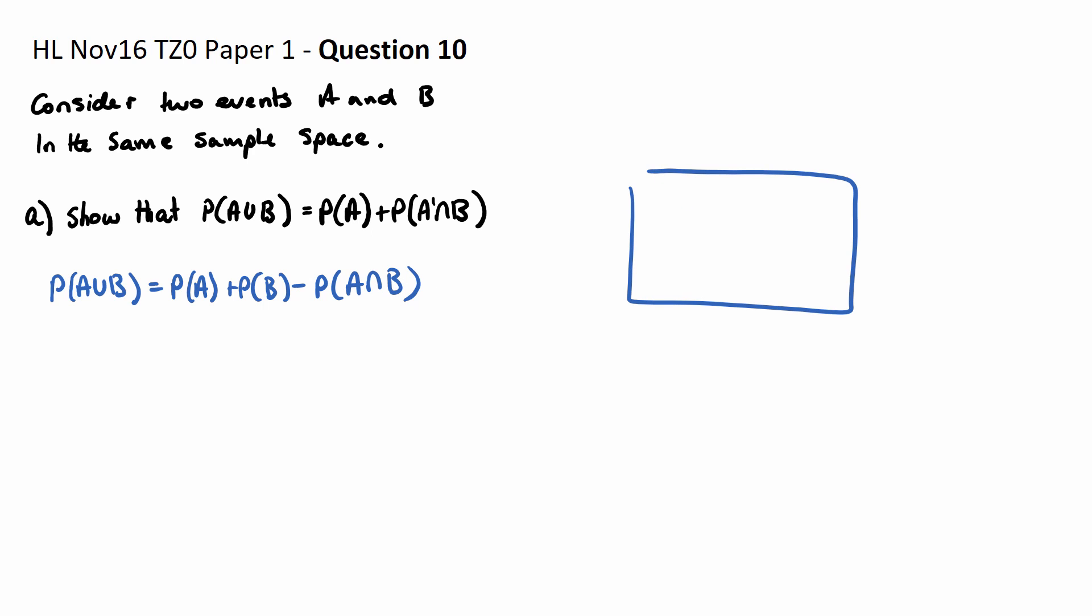And Venn diagram wise, that makes sense. We have all of A plus all of B, but we have the middle counted twice, so we minus away the middle.